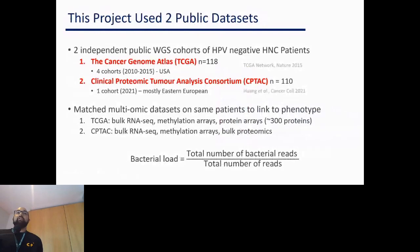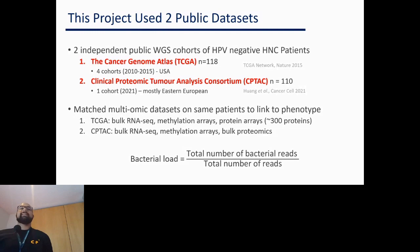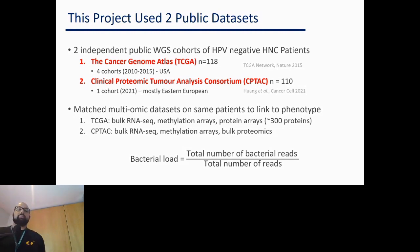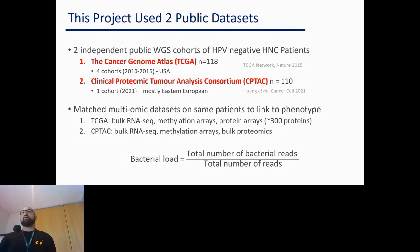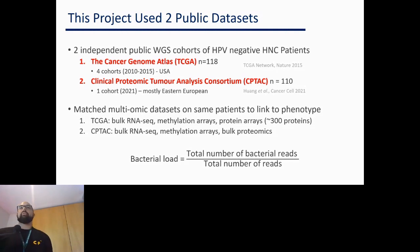In my project I used two public datasets: the Cancer Genome Atlas, which had four different cohorts sequenced at four different places, and the CPTAC dataset done later in 2021, which gave me better proteomic data to integrate along with methylation, RNA, and whole genome data. The bacterial load calculation is very simple — every read identified as bacterial divided by the total reads, i.e., the read depth of the tumor sequencing sample.